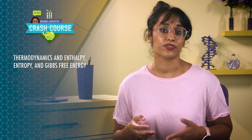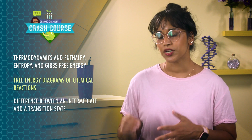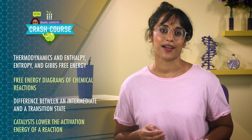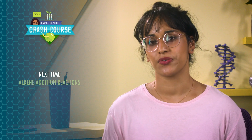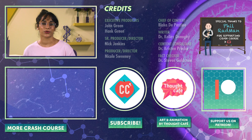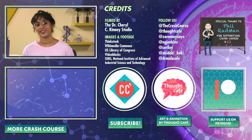In this episode, we did a lot of deep thinking about energy and equilibrium, which will help us predict even more chemical reactions. Specifically, we reviewed thermodynamics in enthalpy, entropy, and Gibbs free energy; drew free energy diagrams of chemical reactions; learned the difference between an intermediate and a transition state; and explained how catalysts lower the activation energy of a reaction. In the next few episodes, we'll look more at the types of addition reactions that involve alkenes. We'll do our best to group these reactions by mechanisms so we can continue to puzzle through — and not memorize — the products that form. Until then, thanks for watching this episode of Crash Course Organic Chemistry. If you want to help keep all Crash Course free for everybody, forever, you can join our community on Patreon.